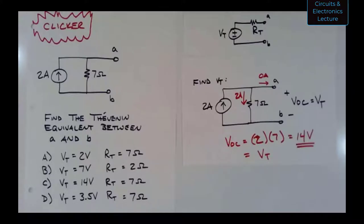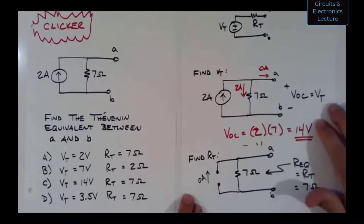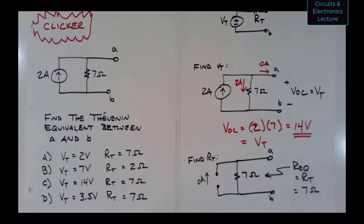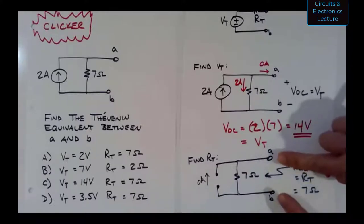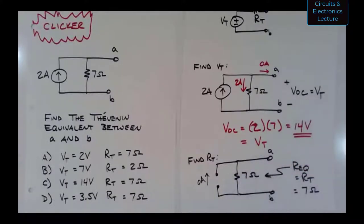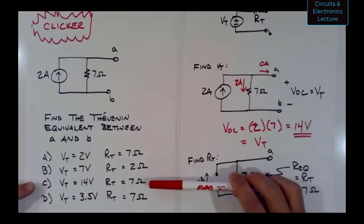For RT, you find the resistance between the two terminals when you zero out the source. To zero out a current source — zero amps — you open it up and take it out of the circuit, making zero amps flow. Looking into terminals A and B with an ohm meter, the only thing left is the seven-ohm resistor. So RT is seven ohms. That gives us answer C.